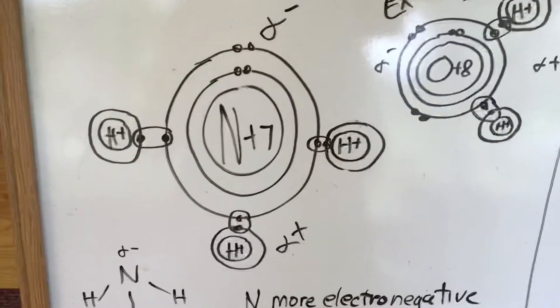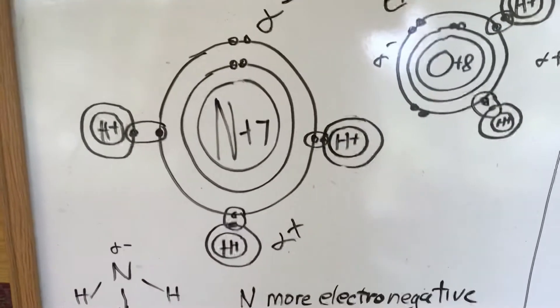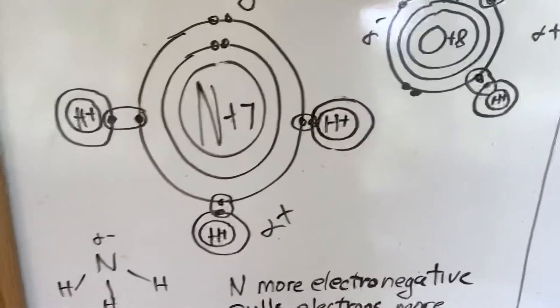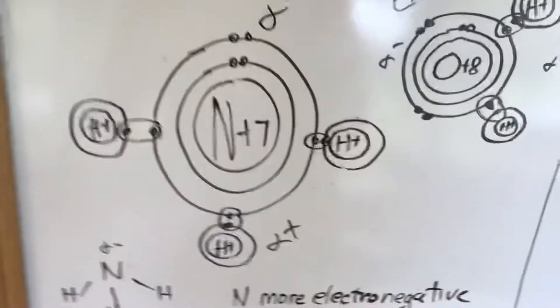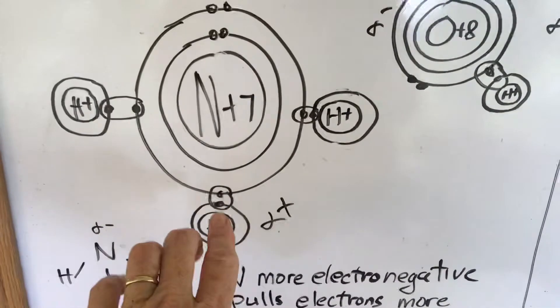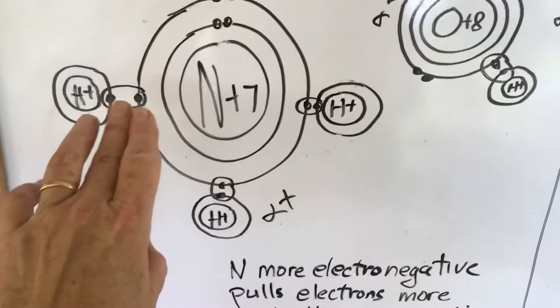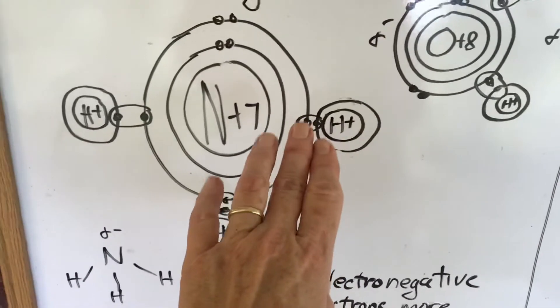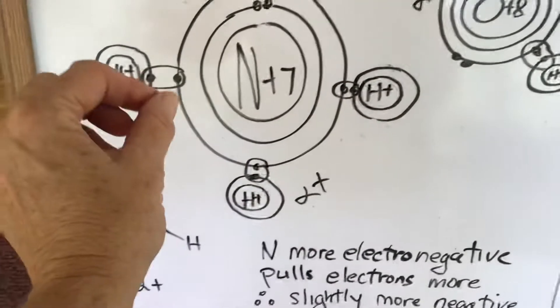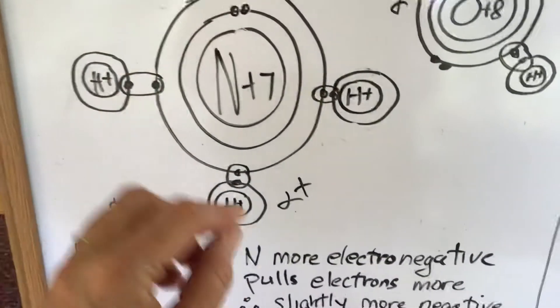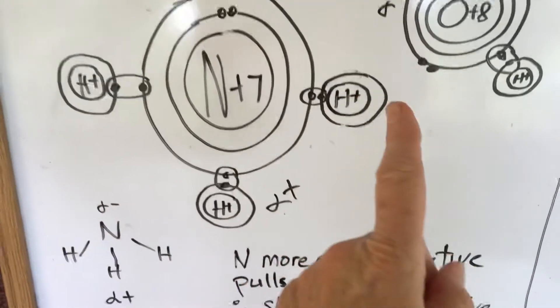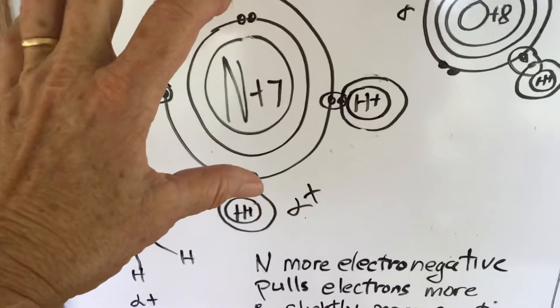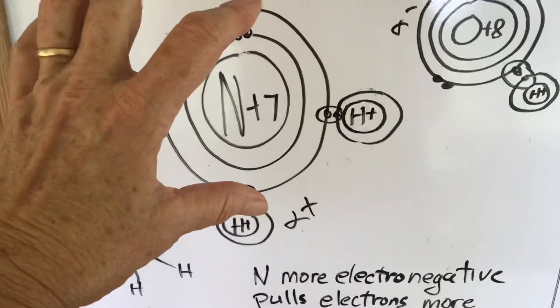So what happens in this case, though, because nitrogen is so much larger than three hydrogens, in other words, plus seven versus plus three, that means that the nitrogens are going to be pulling the electrons from hydrogen into the orbits with their electrons more often than the hydrogens are pulling the electrons from nitrogen into theirs.